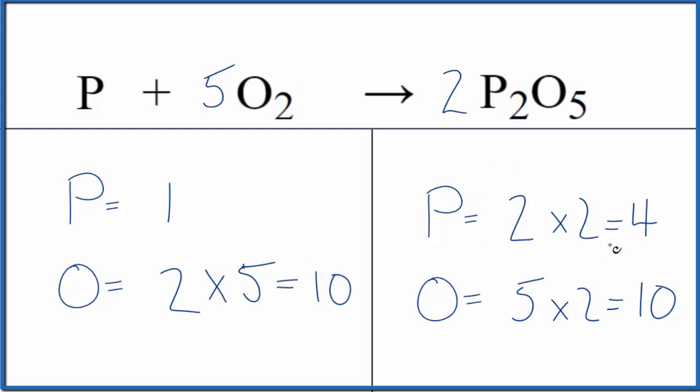And then we need 4 phosphorus atoms, so we'll just put a 4 as our coefficient, 1 times 4, that equals 4. This equation is balanced.